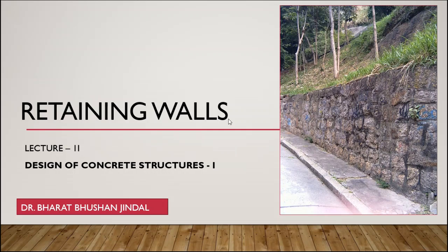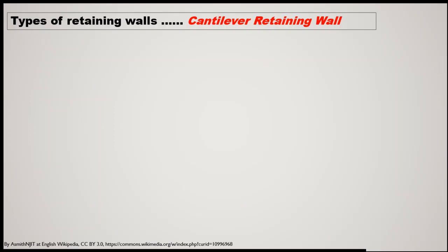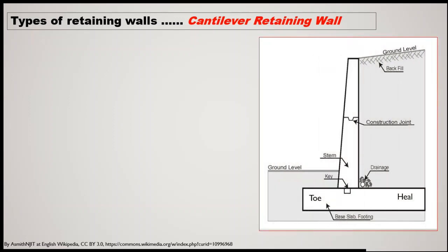Lecture 2: retaining wall, in continuation to our previous lecture. We will now discuss another type of retaining wall — the cantilever retaining wall. In the picture, there is a retaining wall which looks just like a cantilever. At the bottom there is a slab named the base slab, basically like a footing having toe and heel portions, and above it is the vertical wall known as the stem. To connect the stem and the base slab, a key is inserted which makes the connection more efficient.